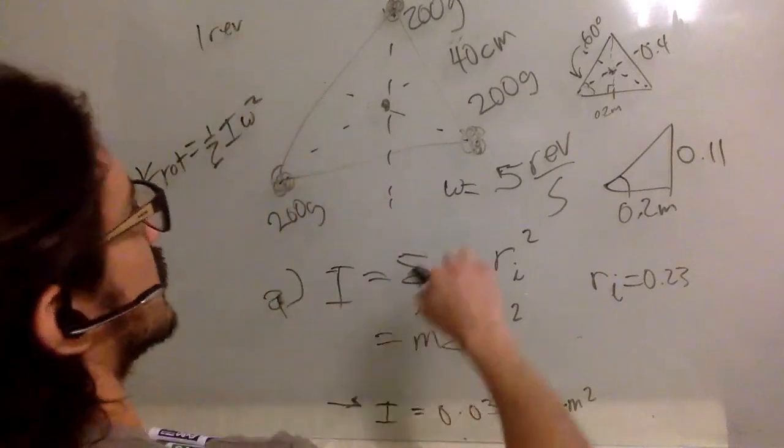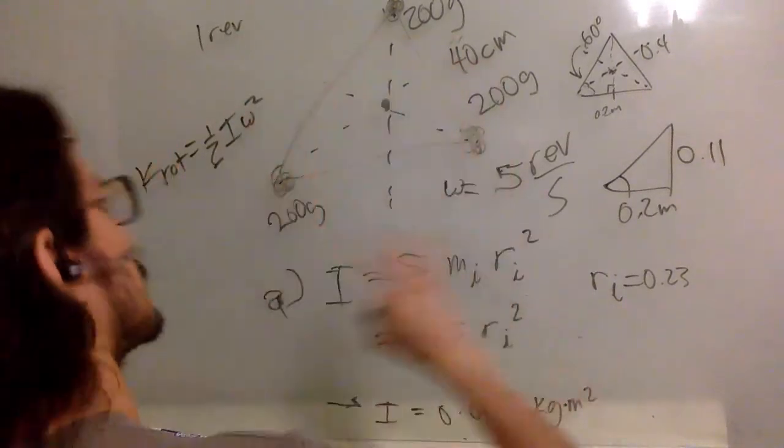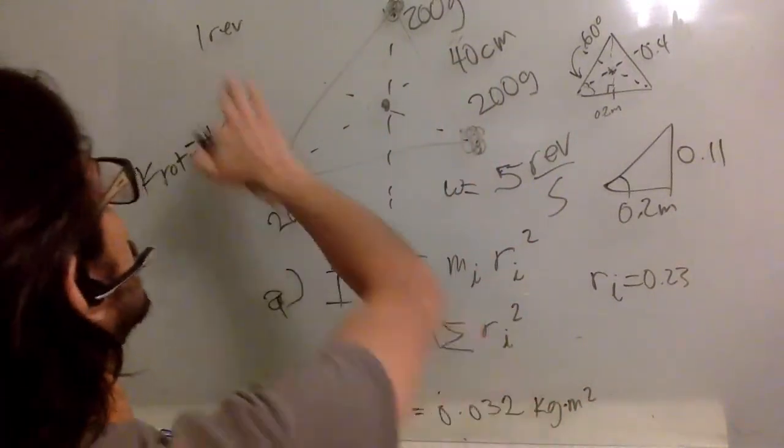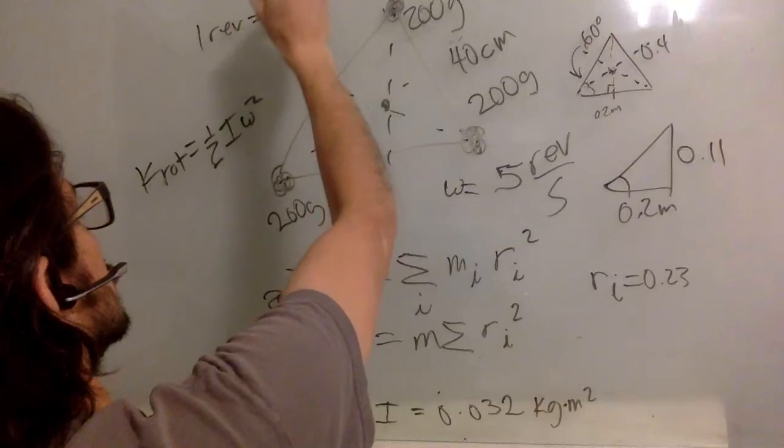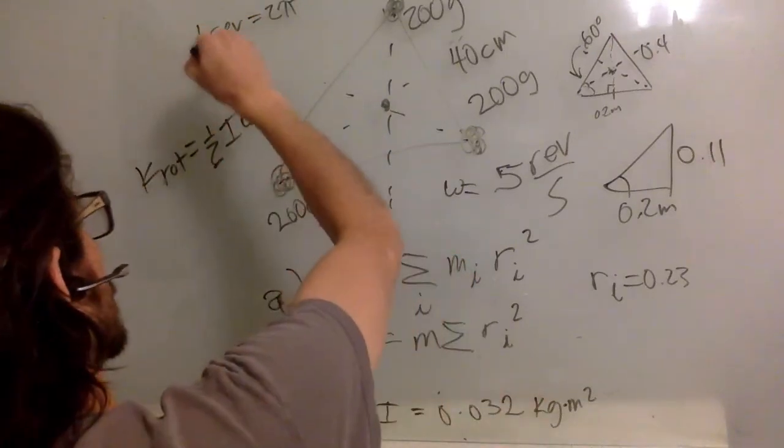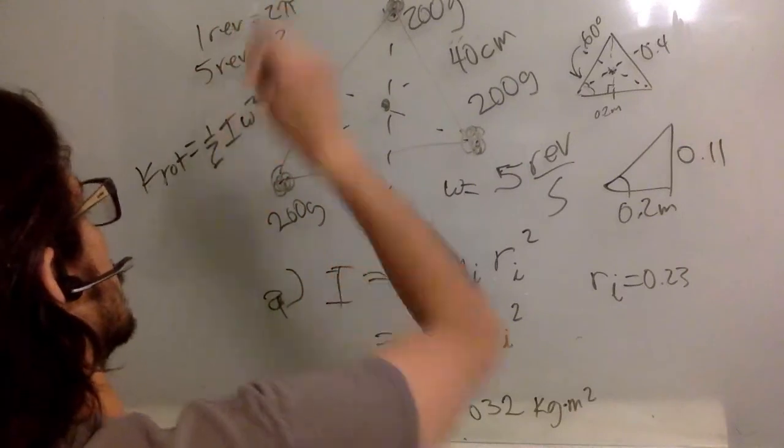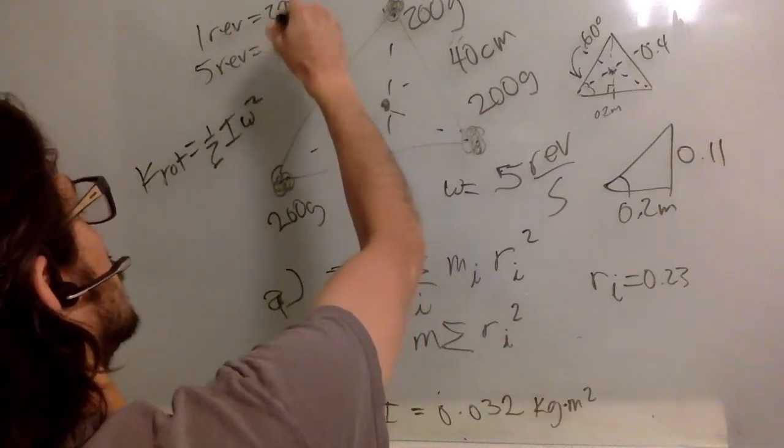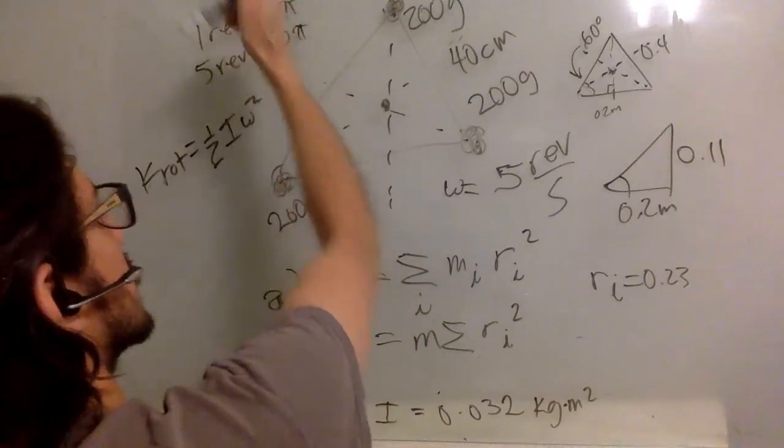So one revolution - whenever you have things that are rotating, you want radians. So one revolution is two pi radians. So five revolutions are going to be how many radians? Well, ten pi.